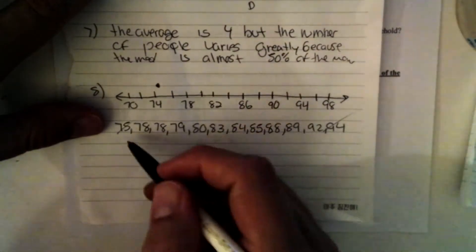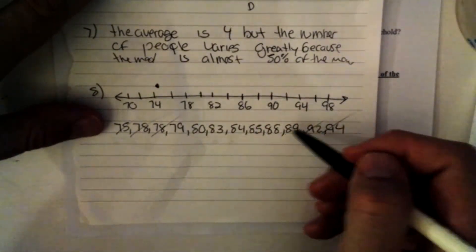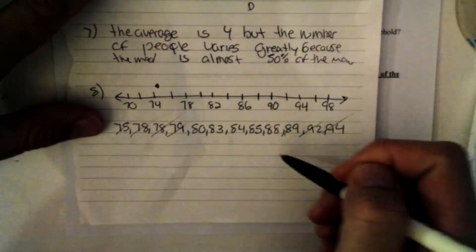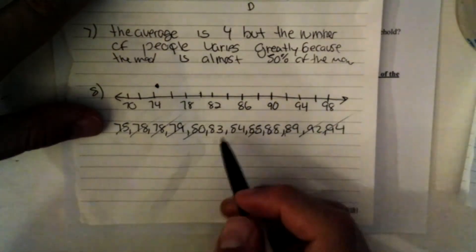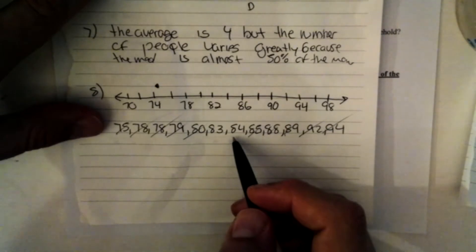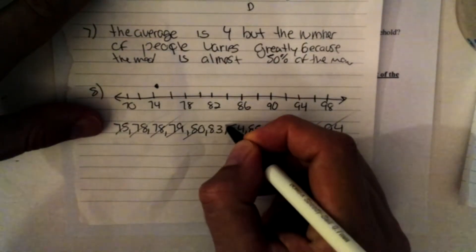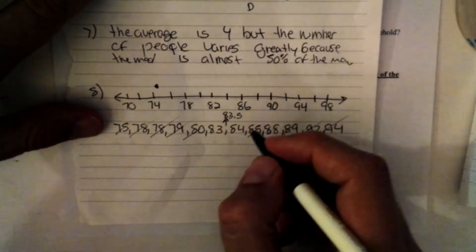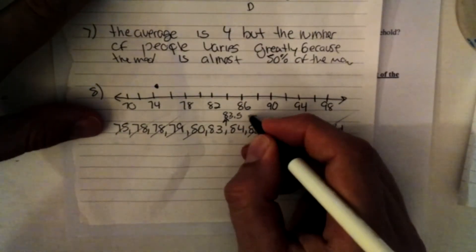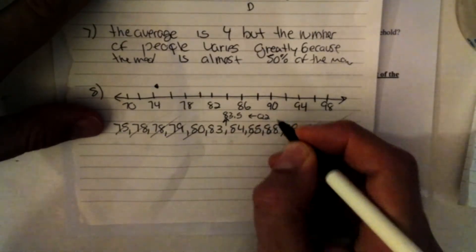After I cross off all my numbers from side to side here, an equal amount on each side, I'm left with 83 and 84. In between 83 and 84 is 83.5. So that'll be my Q2, my quartile two.